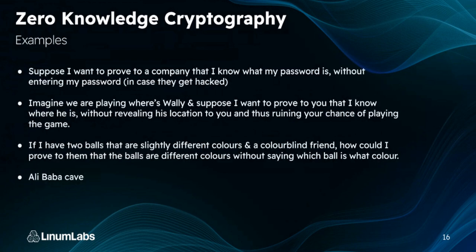Some basic examples: suppose I want to prove to a company that I know my password without entering it. Or imagine we're playing Where's Wally — I want to prove I know where he is without revealing his location. I could take a huge piece of paper much bigger than the Where's Wally page, cut out a small circle, and move the book randomly behind that concealing paper. You won't know where on the page he is, but you can see that I do know where he is. That's an example of a zero knowledge proof.